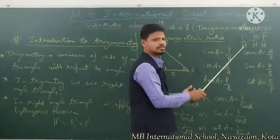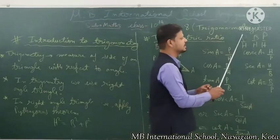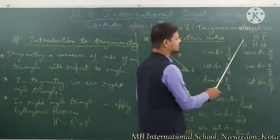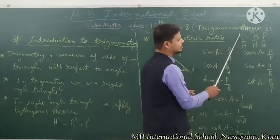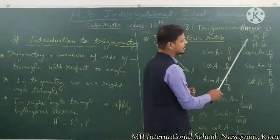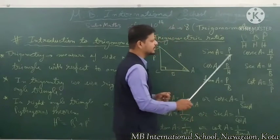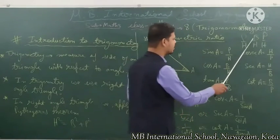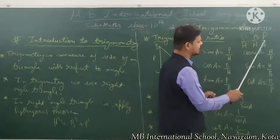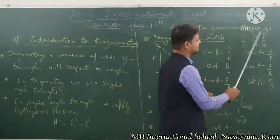If we need the other three ratios, we take the reciprocals. The reciprocal of sine is cosec. Cosec A equals H upon P. The reciprocal of cosec is sine. Then cos: its reciprocal is sec, and sec equals H upon B.